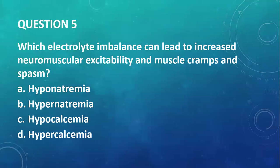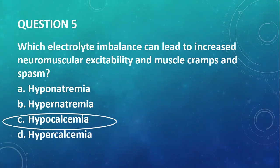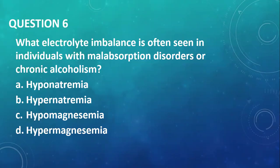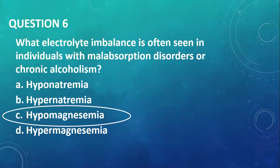Question number five: which electrolyte imbalance can lead to increased neuromuscular excitability and muscle cramps and spasms? If you remember from the other video, you will know it is hypocalcemia. Question number six: what electrolyte imbalance is often seen in individuals with malabsorption disorders or chronic alcoholism? The answer is hypomagnesemia.